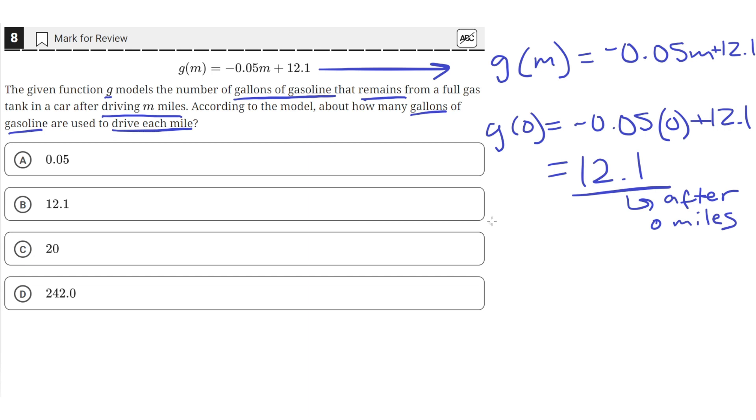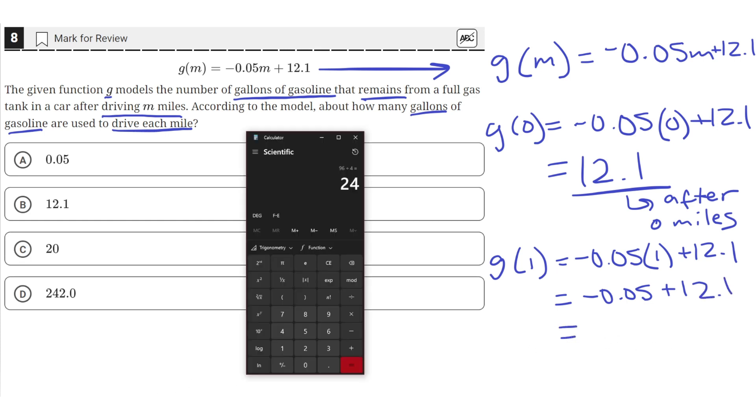Now let's find out how much gallons are remaining after one mile. So g of one is equal to negative 0.05 times one mile plus 12.1. So this time we have negative 0.05 plus 12.1.